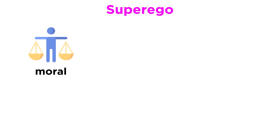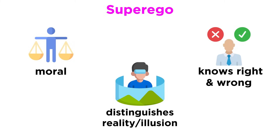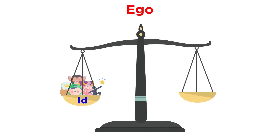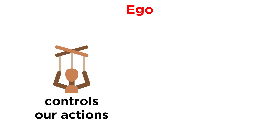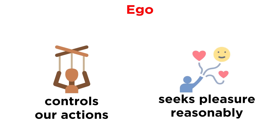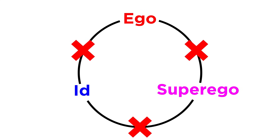The superego is the moral component of our psyche — we can think of it as the conscience of the mind. The superego can distinguish between reality and illusion and knows the difference between right and wrong. Freud believed that without the superego, people would have no way of knowing what actions are immoral. The ego's role is to create a balance between the impractical pleasure-seeking id and the impractical moralism of the superego. The ego is what directly controls most of our actions, seeking out pleasure while understanding that reality will not let all of our desires be fulfilled. Freud believed that each element of our psyche is incompatible with the others, so they will inevitably come into conflict.